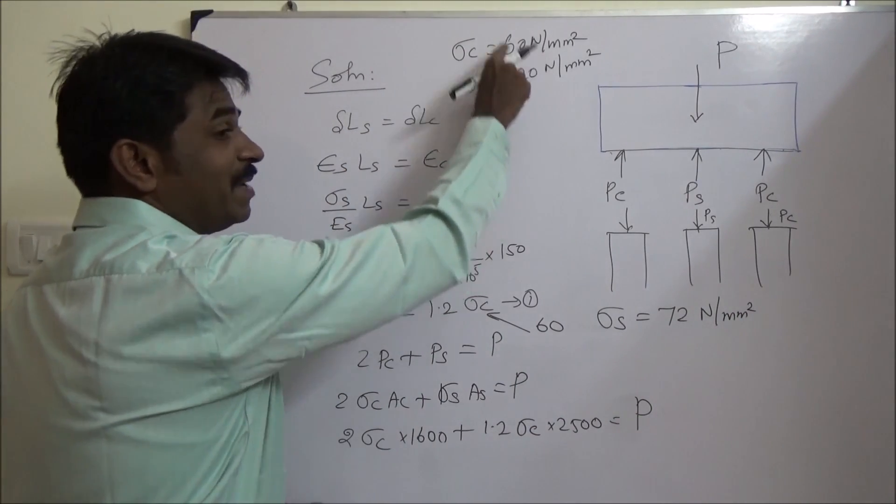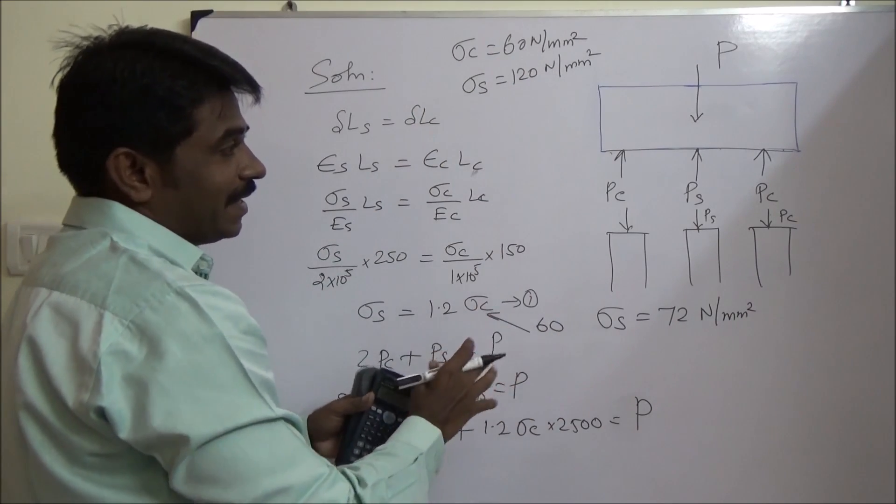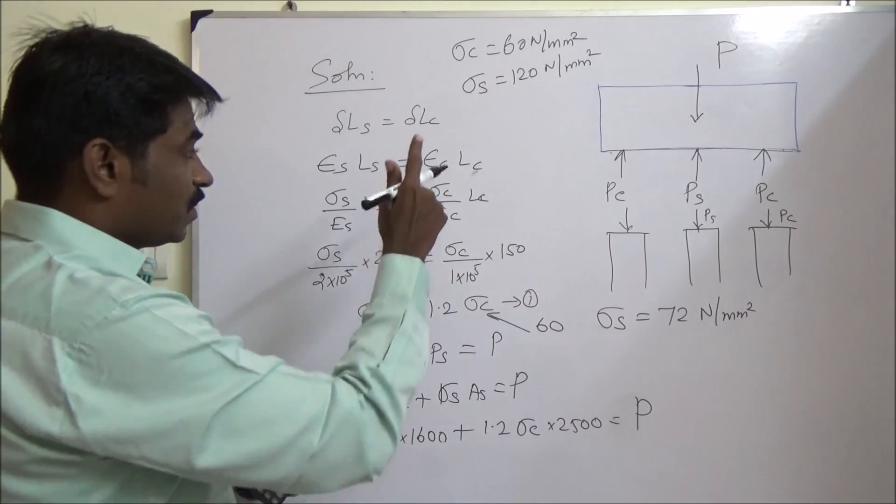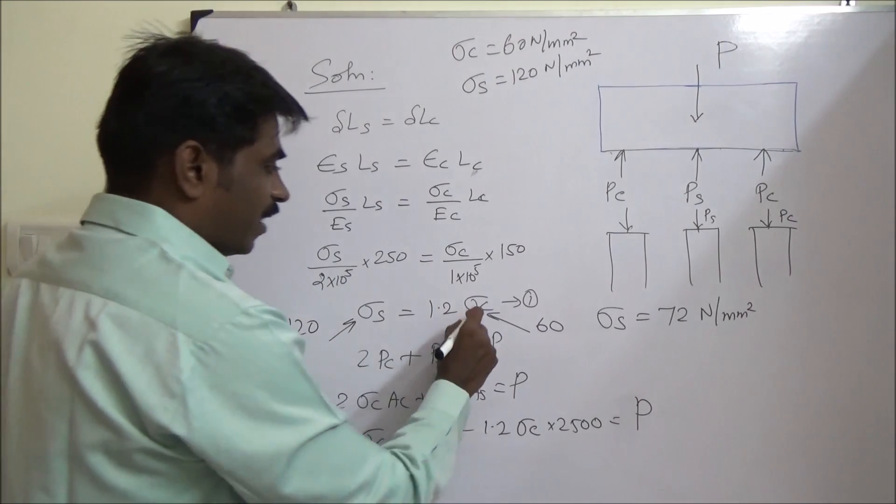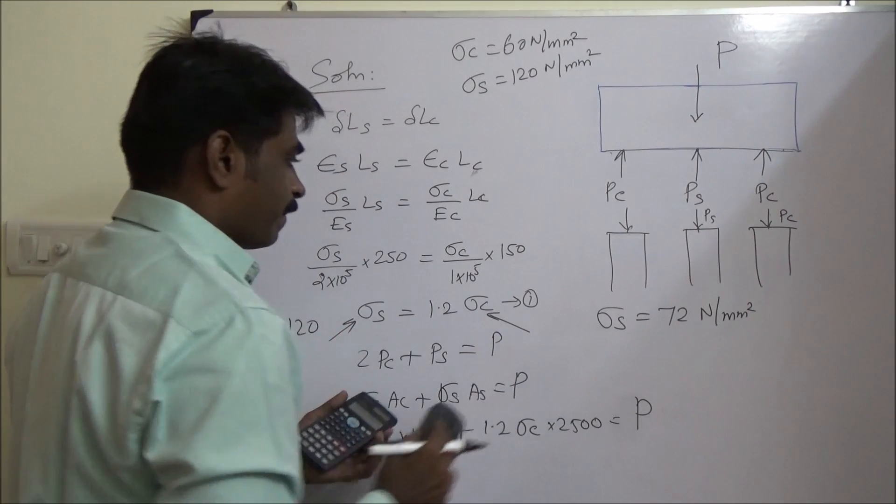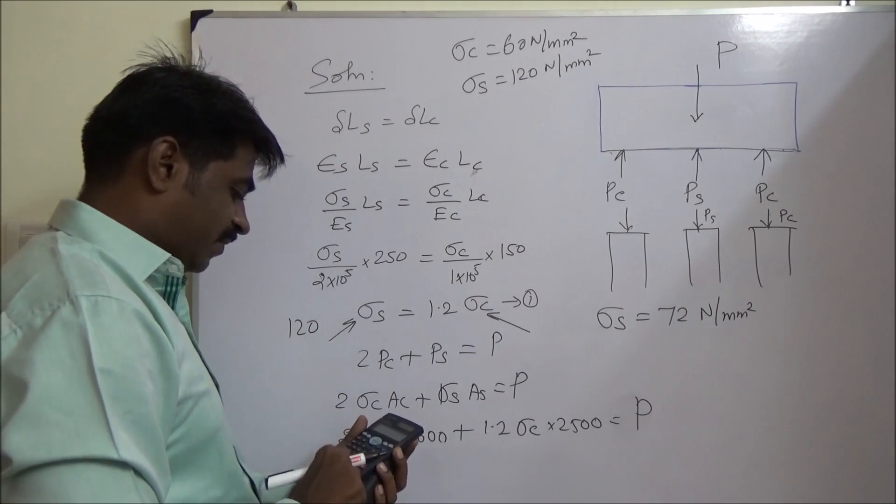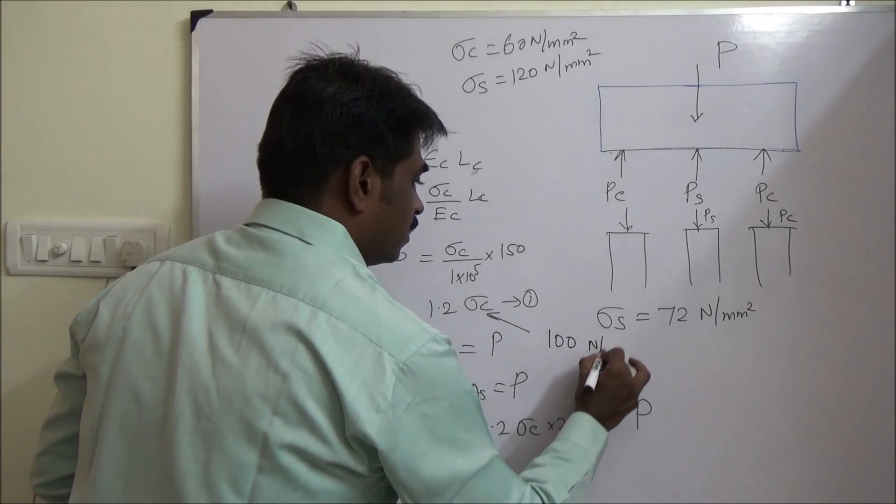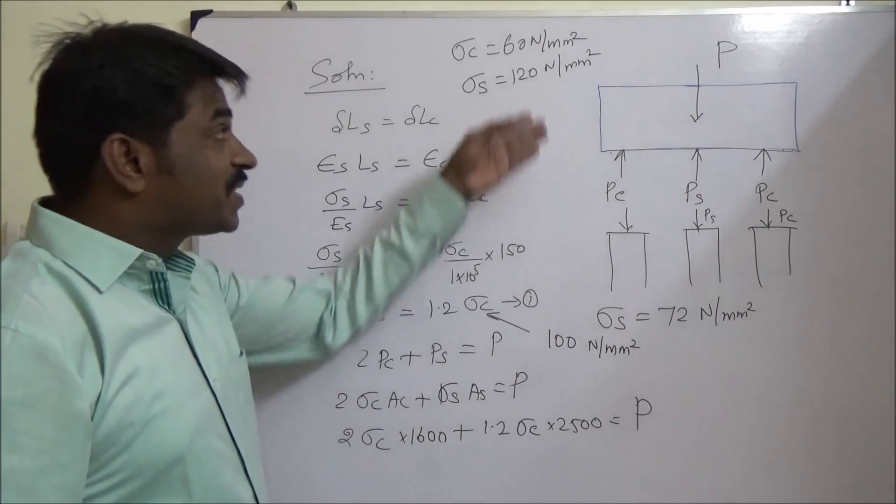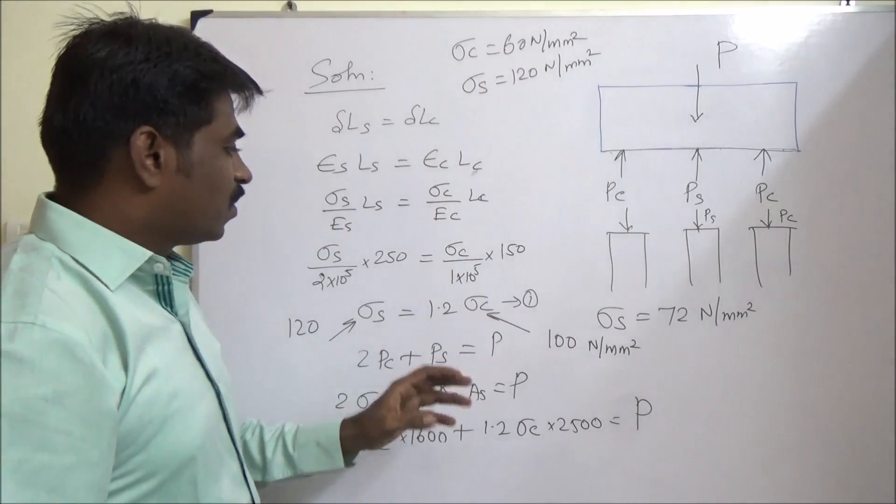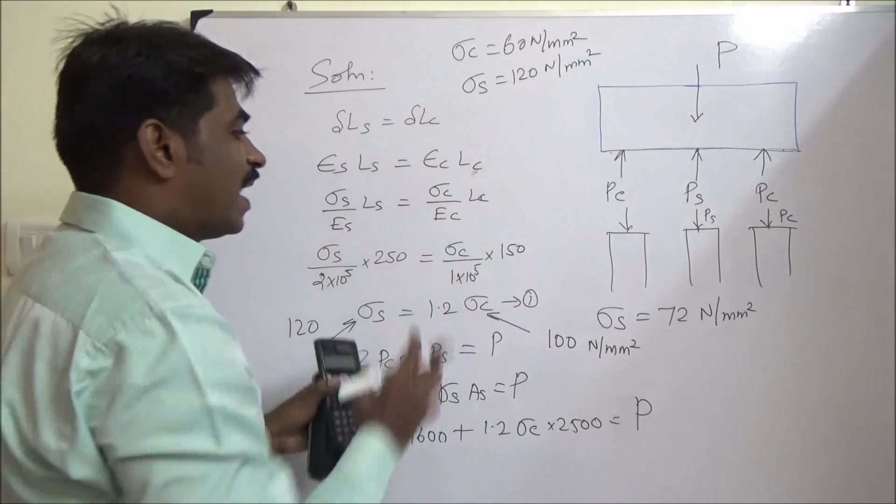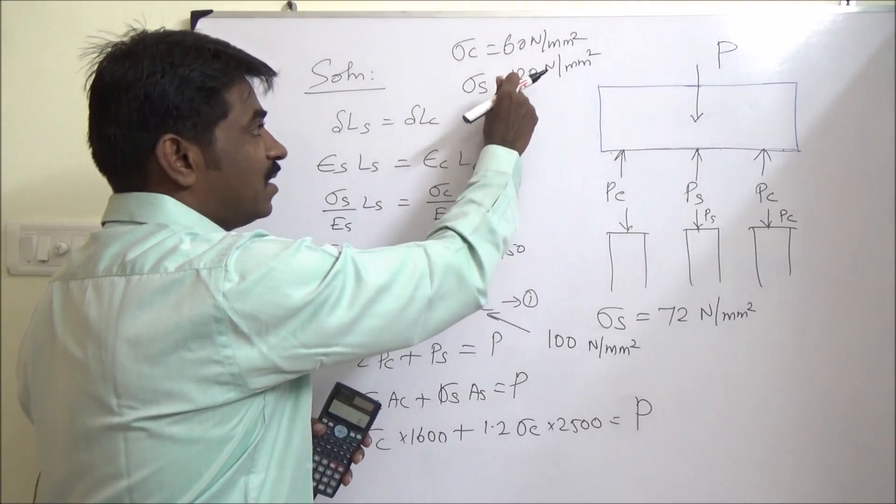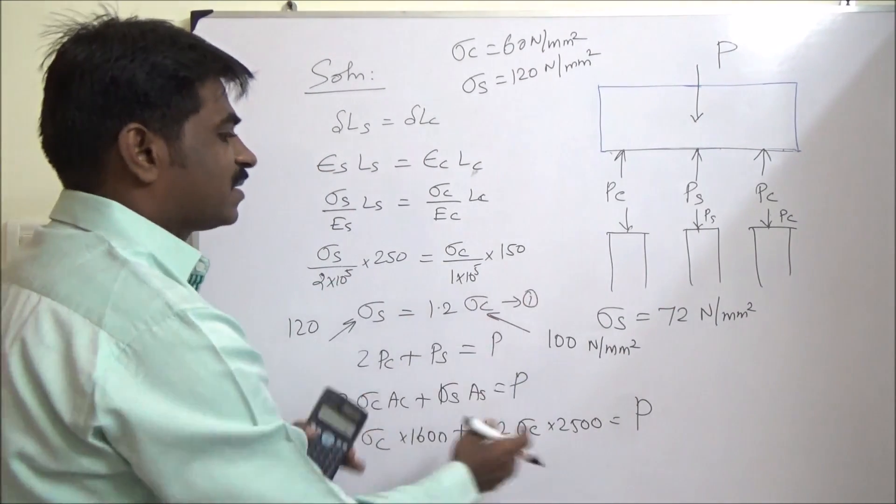Suppose if we substitute, these are the limiting stresses. That means in any case, the stress should not exceed these values. So if we substitute 120 and find sigma C, it is 120 divided by 1.2. It comes about, the value is 100 Newton per mm square, which exceeds the 60 given. So what you have to do is, while using these values, you have to be very careful. Use sigma C as 60 and the corresponding value of sigma S goes to 72 Newton per mm square. Using that, find P. Is it clear now?